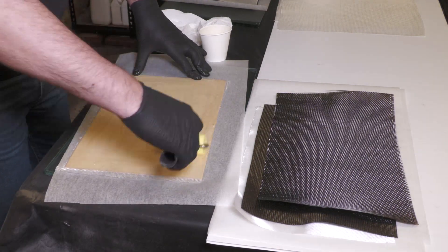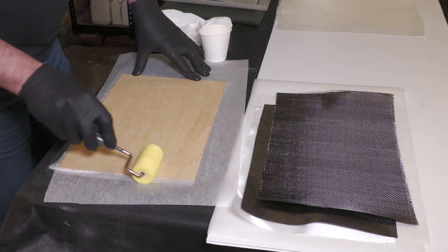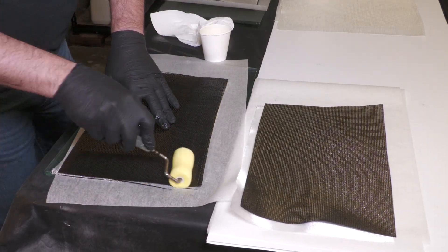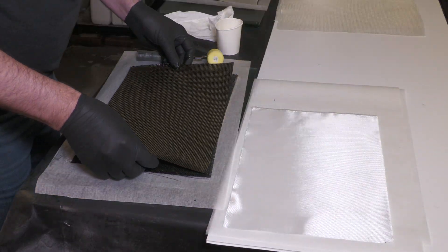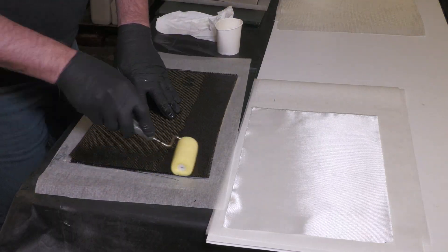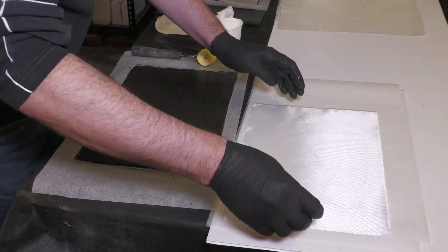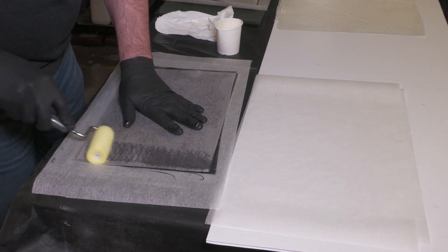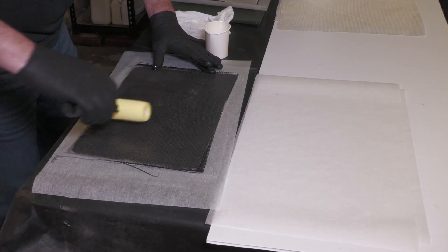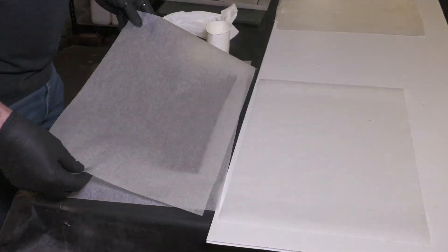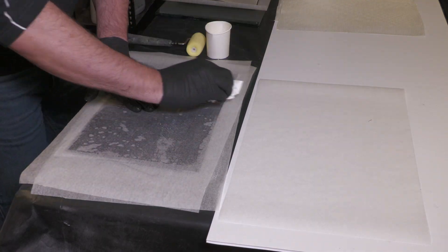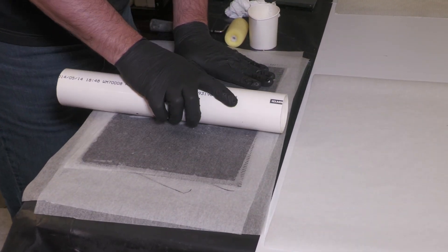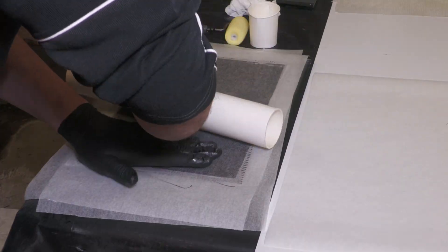Each side of the fin has two layers of fiberglass and two layers of carbon fiber. Then we put a sheet of baking paper on top and drove out most of the big bubbles. We used a PVC pipe as a squeegee to more evenly spread the epoxy and drive out the rest of the bubbles.